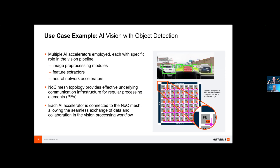Looking specifically at the automotive segment, there's a use case focused on AI application for machine vision with object detection. Multiple AI accelerators — including image pre-processing modules, feature extractors, and neural network accelerators — are employed in the vision pipeline. NOC mesh topology provides the most effective communication infrastructure for these processing elements, allowing seamless data exchange and collaboration among the accelerators. The processing elements really need to access data from any particular direction. You're moving a lot of data in these mesh networks in many different directions, so you really have to keep track of what's going on.